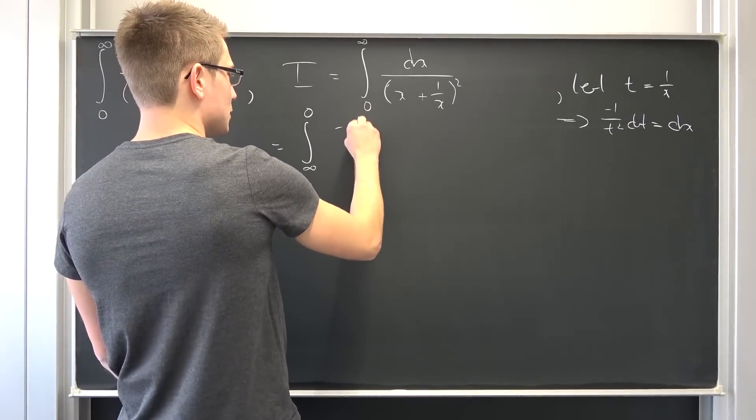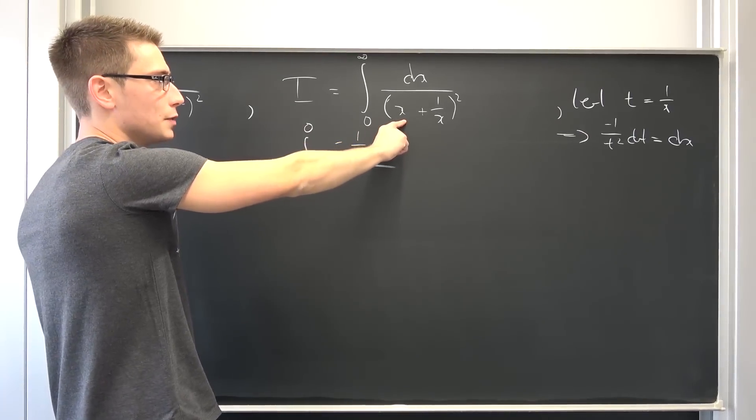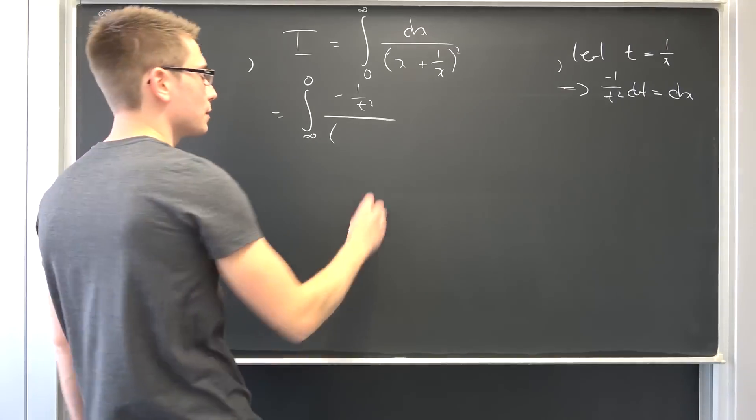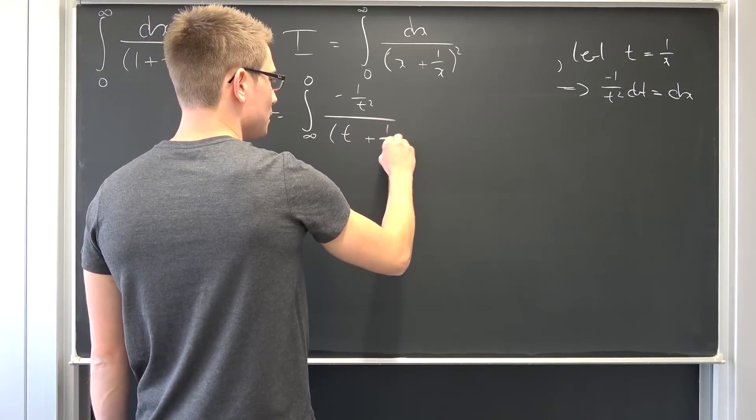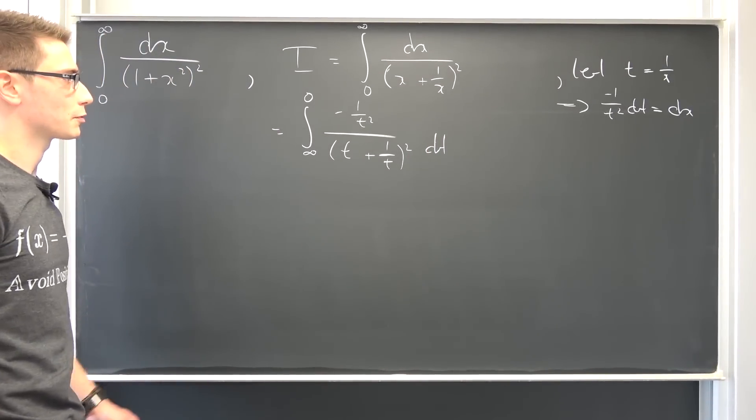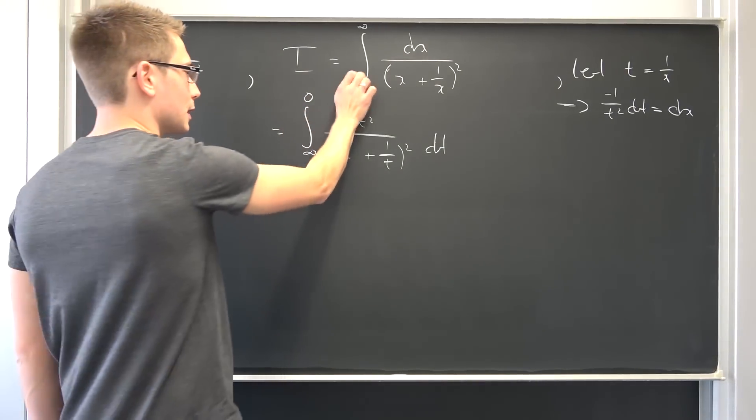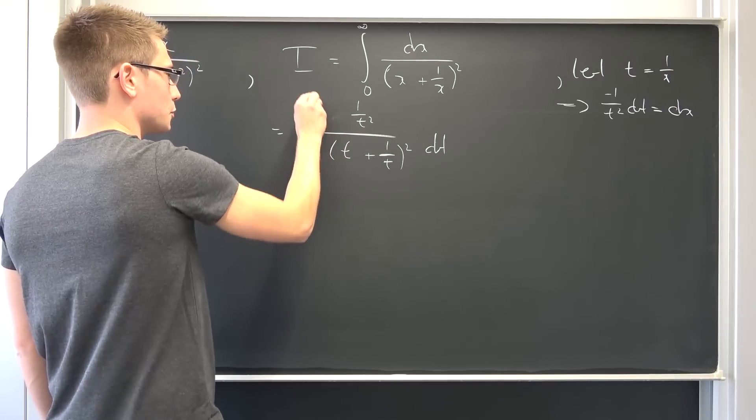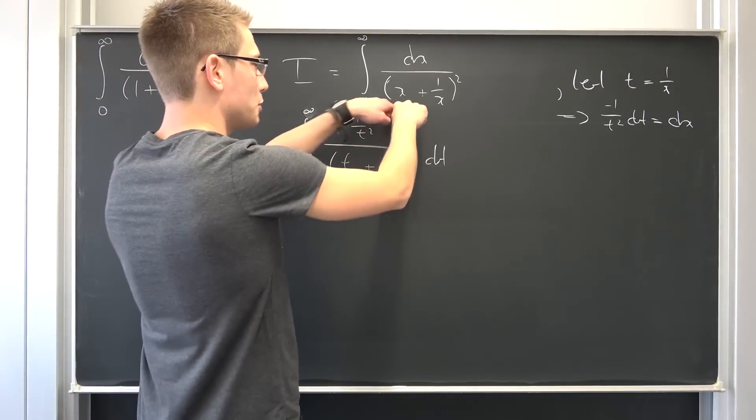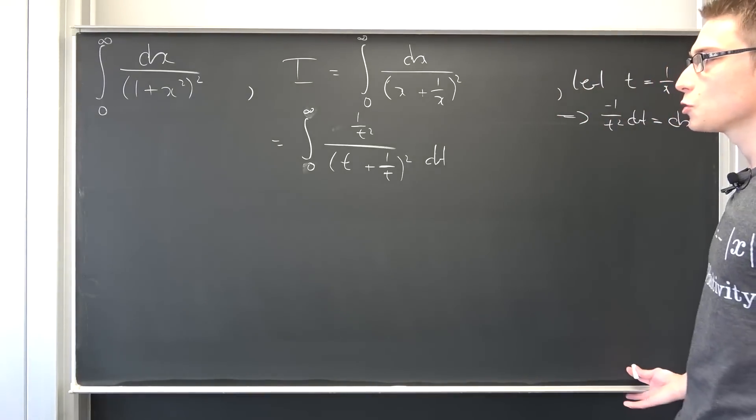Meaning, we are going to have negative 1 over t squared over... you see, x is 1 over t, and 1 over x is t. Meaning, this down here is also being preserved. We are going to get t plus 1 over t, but the whole thing squared, integrated with respect to t. Now, we are going to make use of the fundamental theorem of calculus and distribute the negative sign to change the upper and lower bounds. Now, it's from 0 to infinity yet again. This is quite cool. We have preserved our denominator. And now we are going to add i and i together to arrive at 2i.